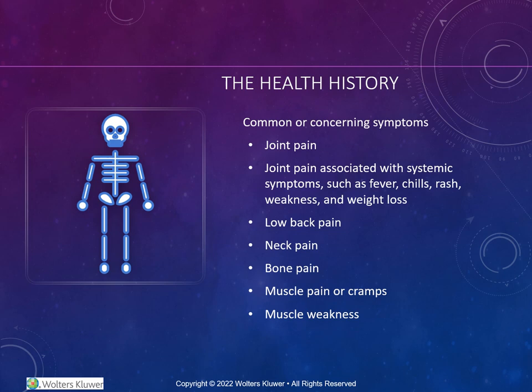Lower back pain, especially when accompanied with costovertebral angle tenderness or CVA tenderness, could indicate pyelonephritis or nephrolithiasis. Other causes that could potentially indicate an underlying issue is neck pain, which could mean meningitis. Muscle pain and/or cramping may equate to anything as simple as overexertion with exercise to electrolyte abnormalities, thyroid disease, or even side effects of medications such as statins. Muscle weakness, specifically unilateral weakness, is especially concerning and could be indicative of a CVA.